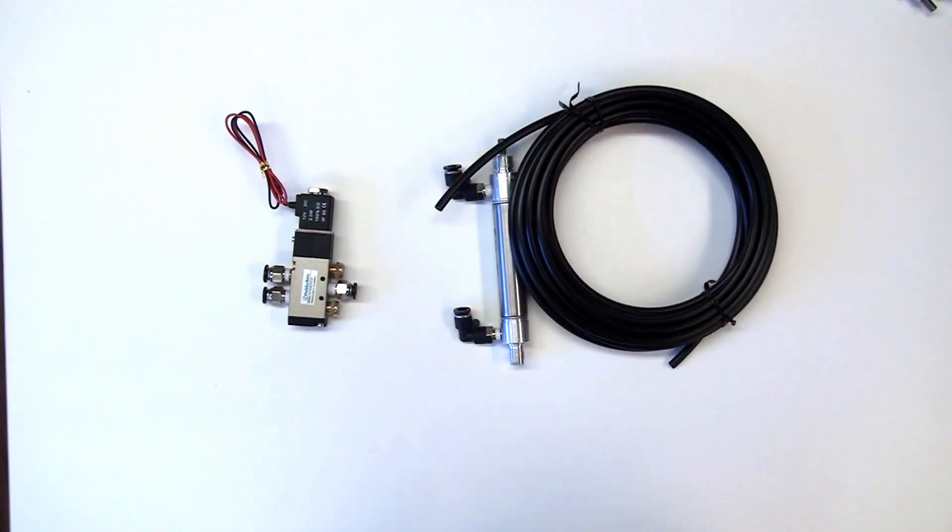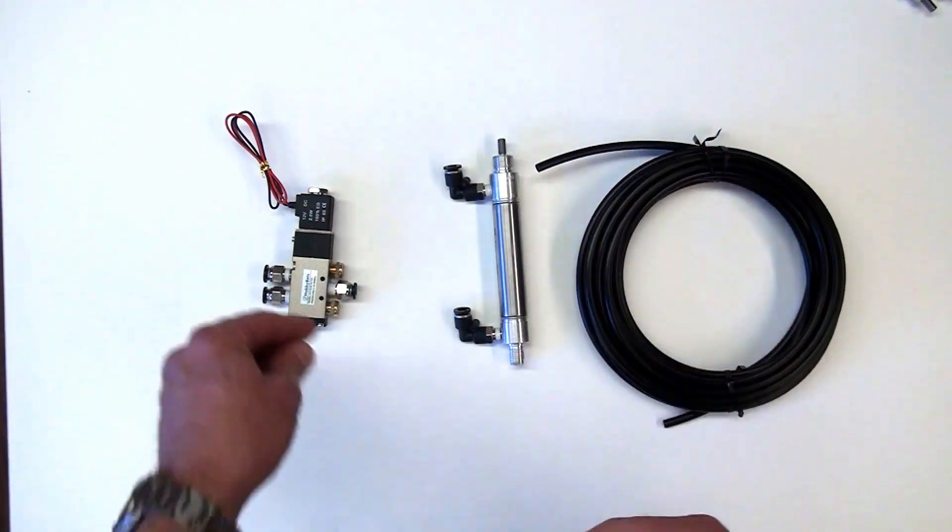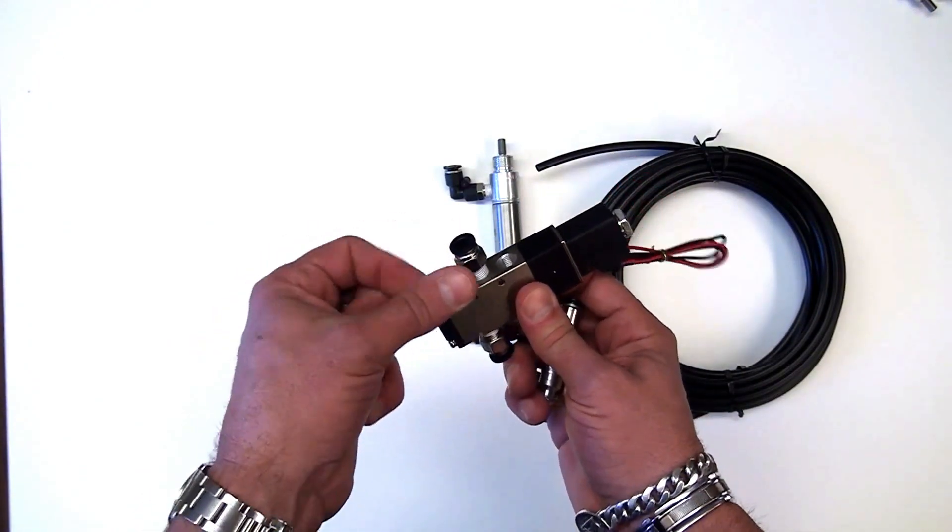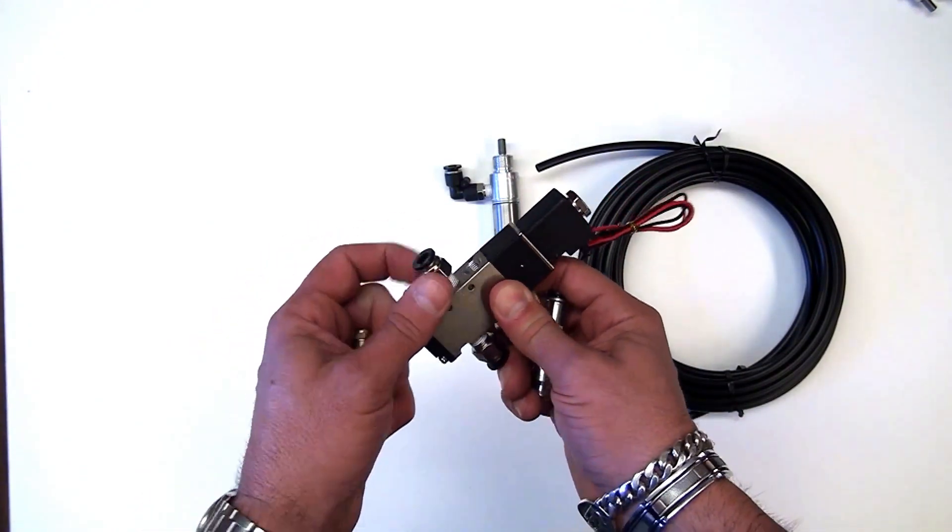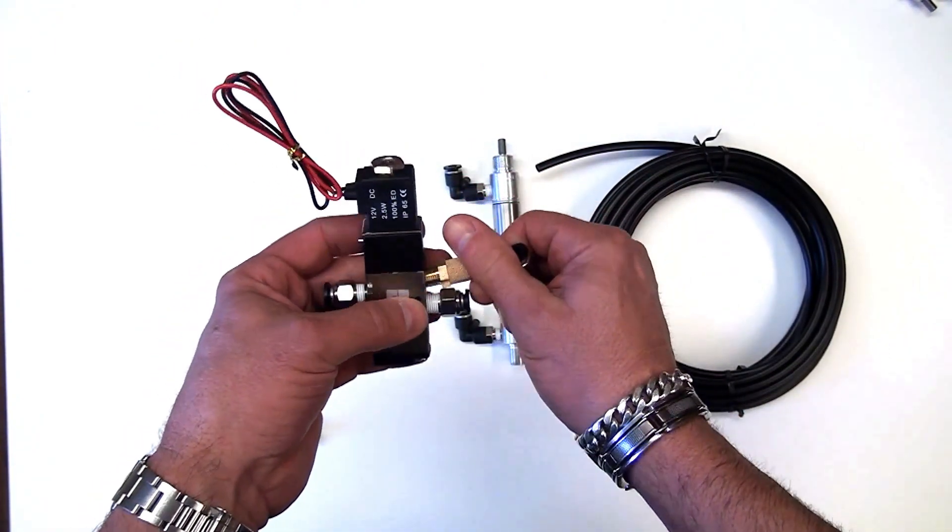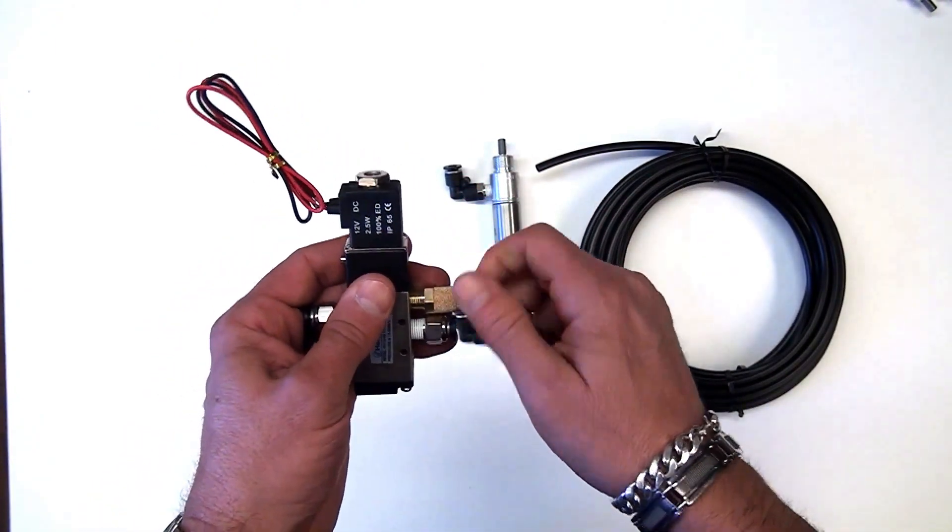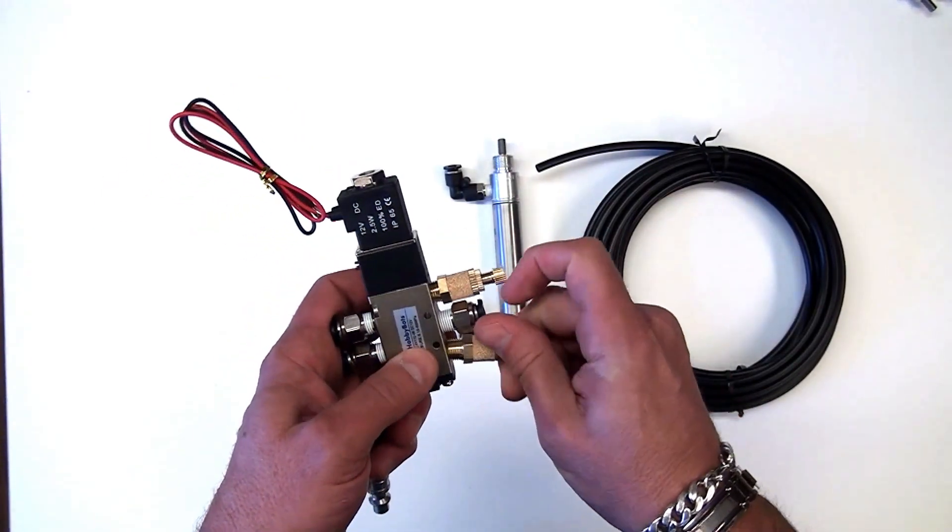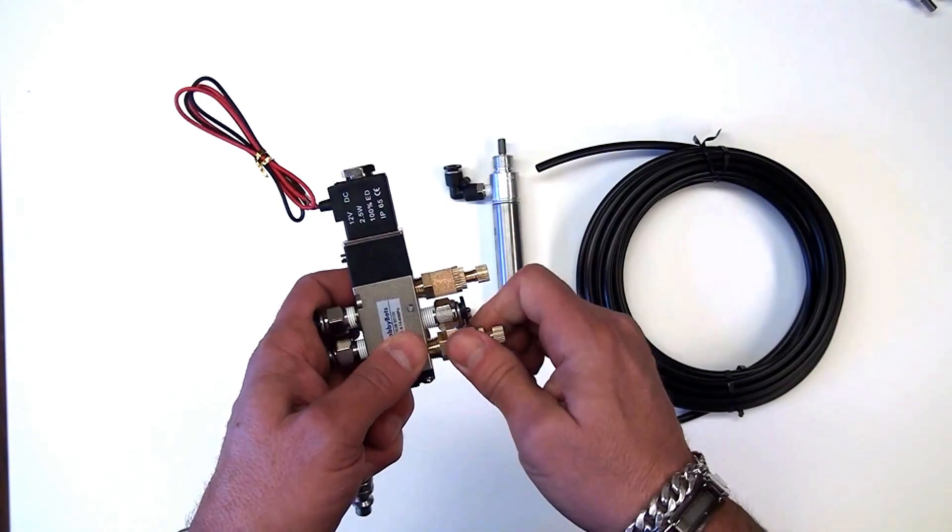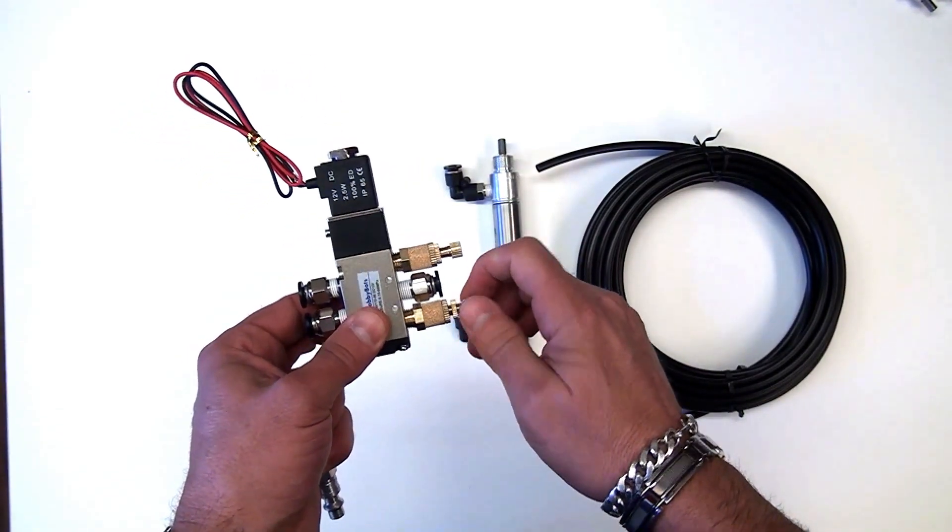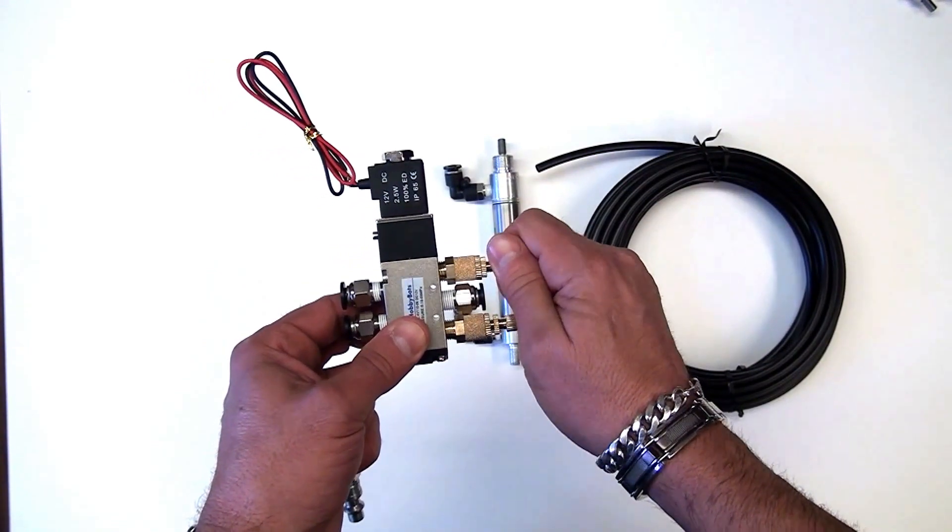There's a couple optional items you might want to look at getting that do not come with the kit. You can remove these debris filters here and put speed control mufflers in there instead. What these will allow you to do is turn the needle valve and speed up or slow down the cylinder.